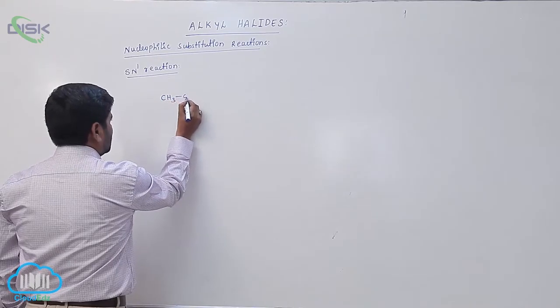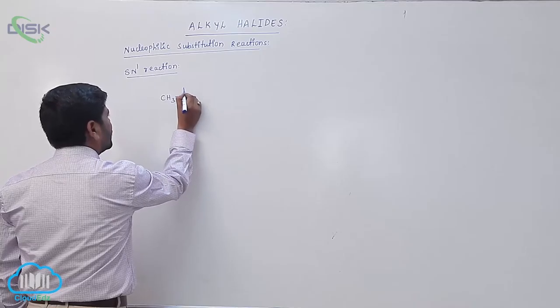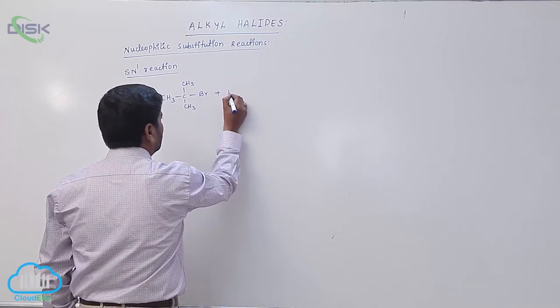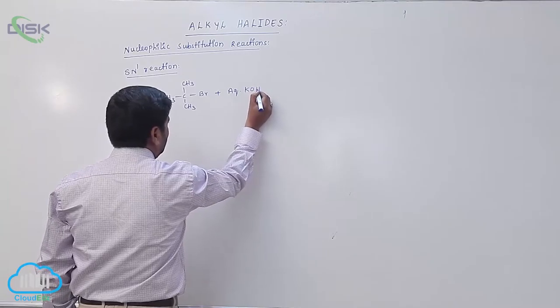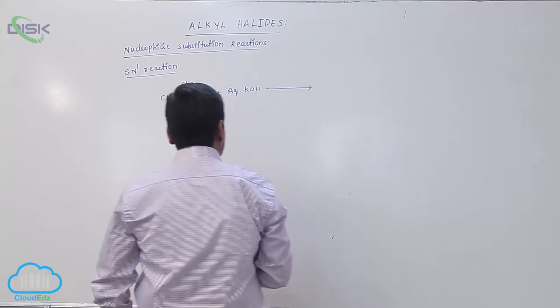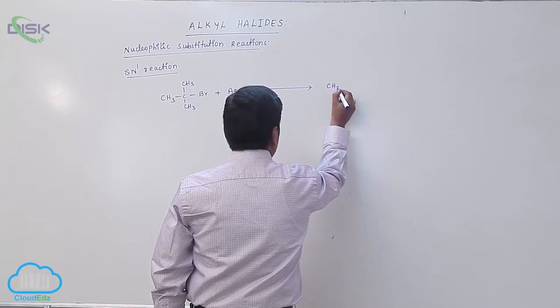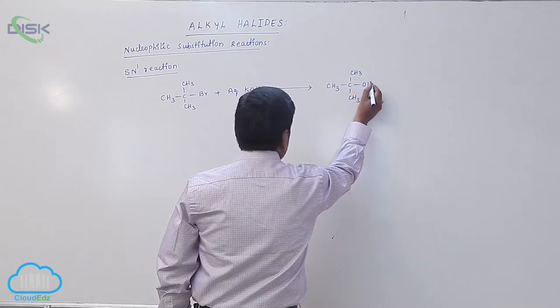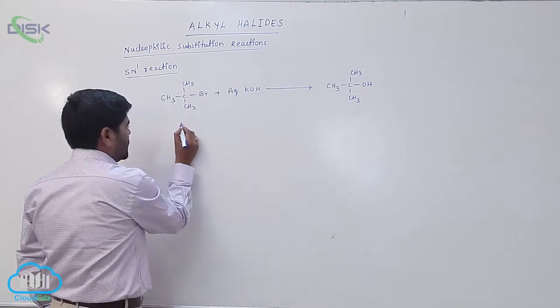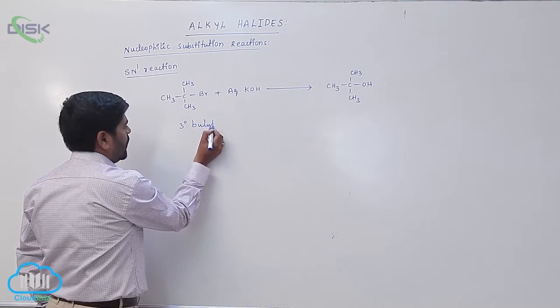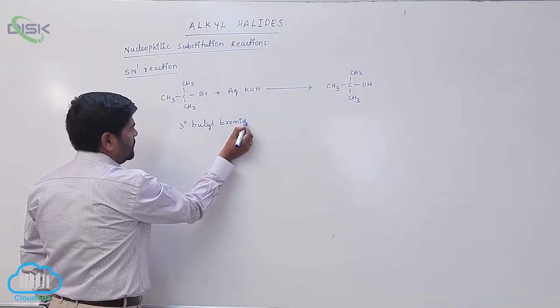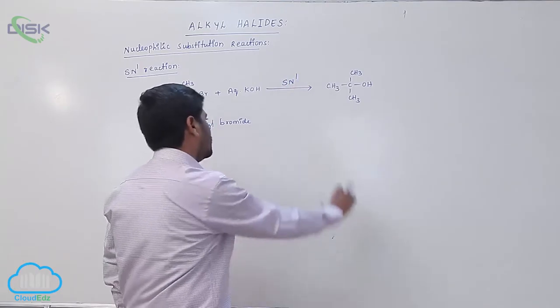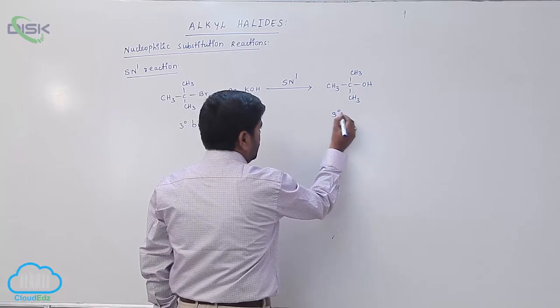This is tertiary butyl bromide. When tertiary butyl bromide reacts with aqueous potassium hydroxide through SN1 mechanism, the product is tertiary butyl alcohol.